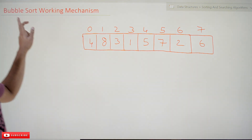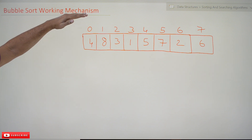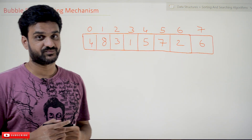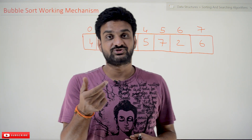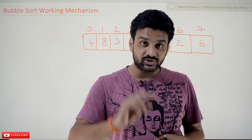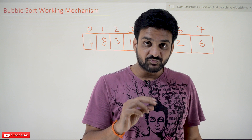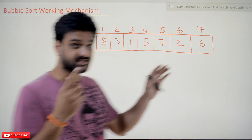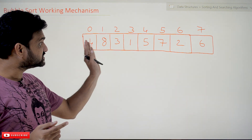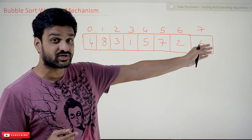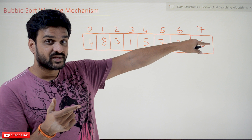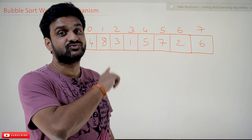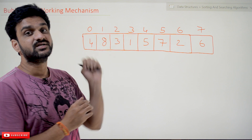Now coming to this class, we will try to understand bubble sort's working mechanism. This is another kind of sorting algorithm. Before understanding the algorithm, we will try to understand how bubble sort works — that is very important. The name itself states it: bubble sort means the elements are going to move from bottom to top. Just like a bubble in water moves from bottom to top, the largest element is going to move to the end of the array, which is its sorted position. That is the reason why it is called bubble sort.